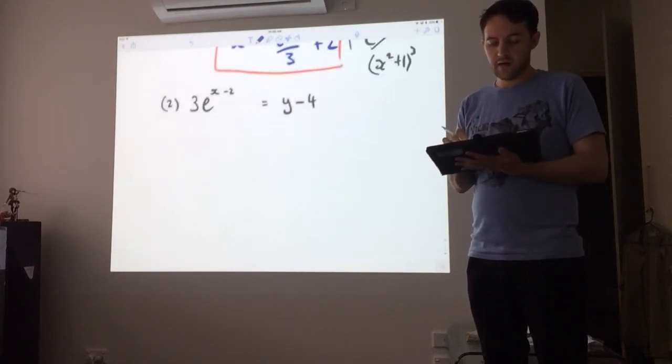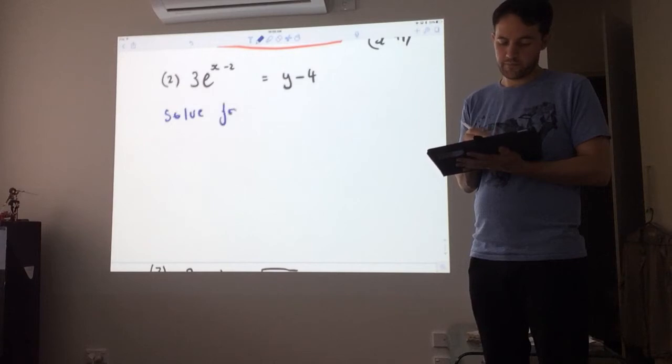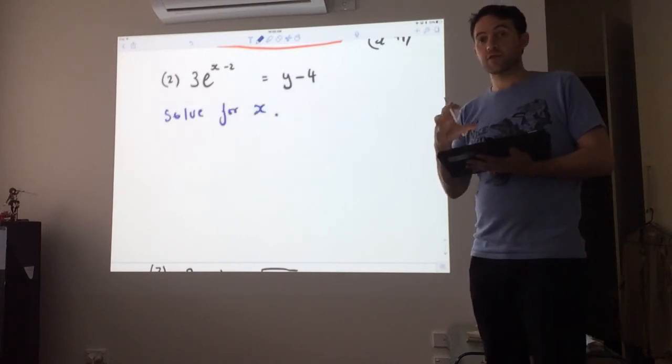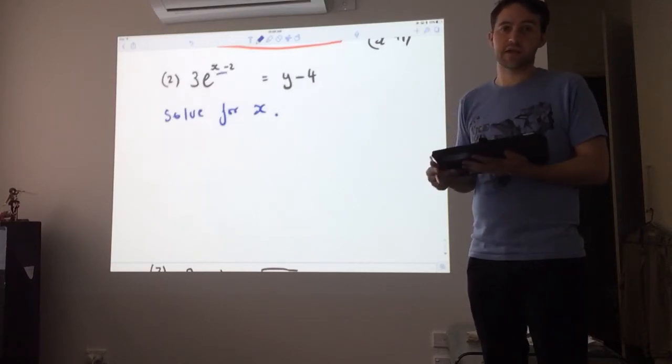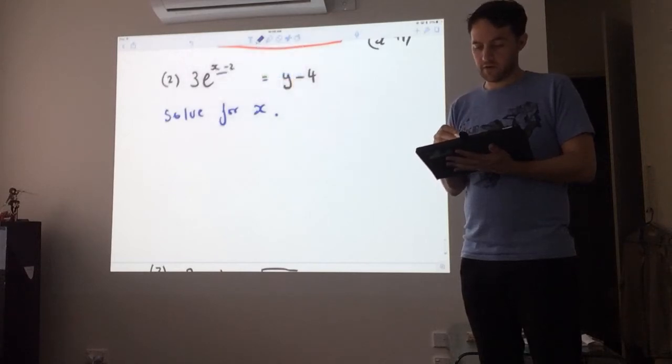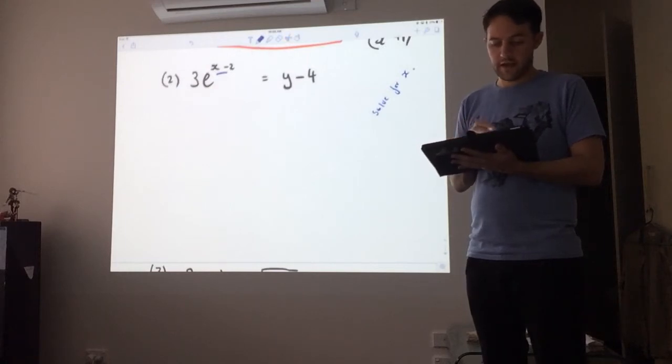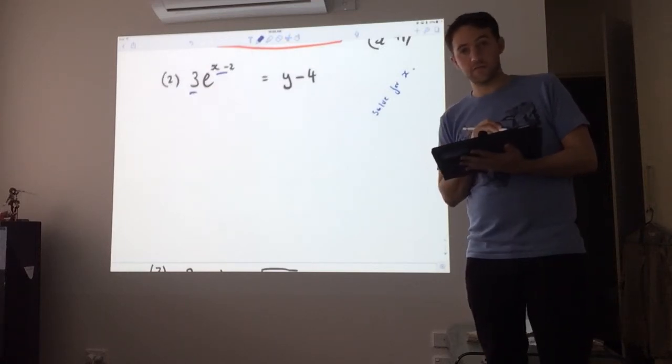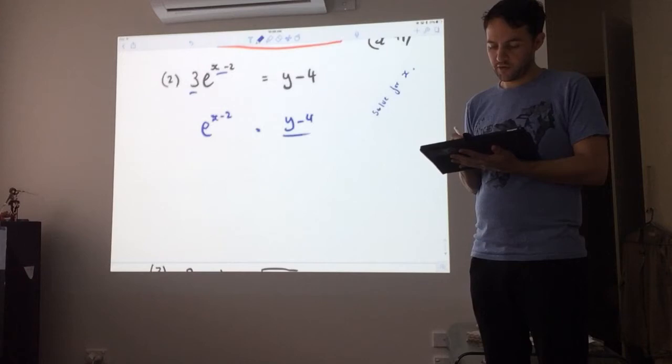So in this case here, I want to solve for x. And so what I need to do is be able to get x out of this exponential function thing that's happening. First, get rid of the 3.